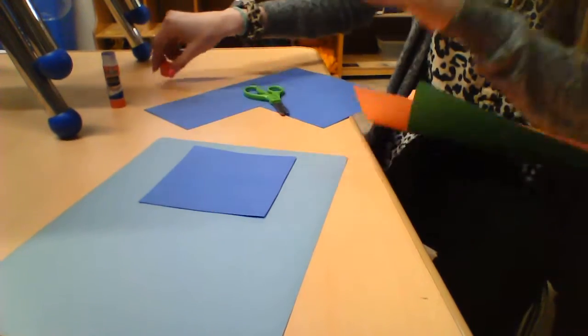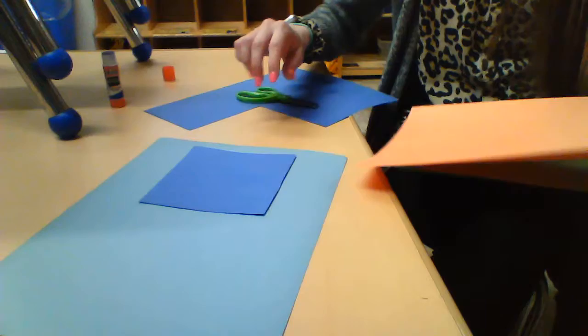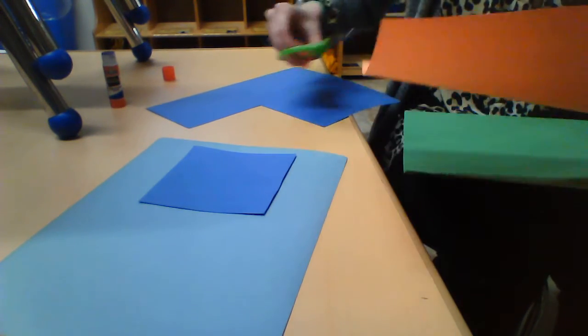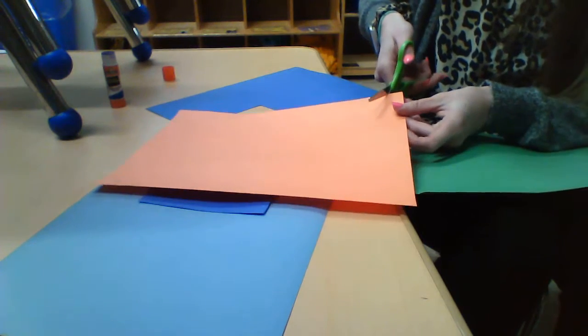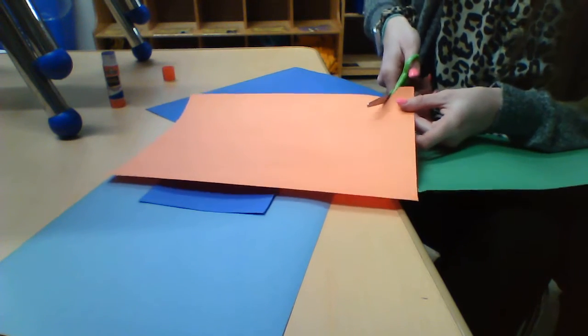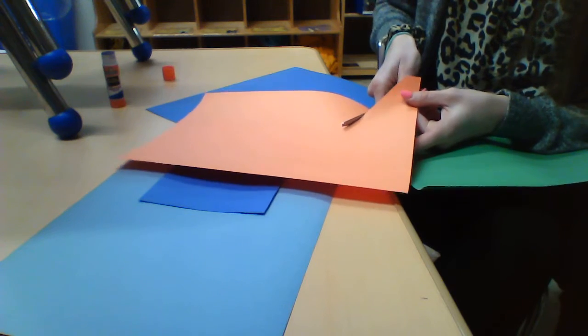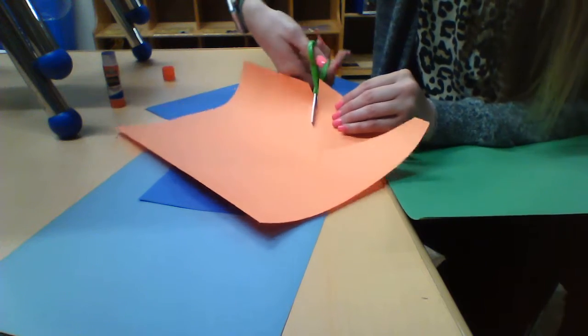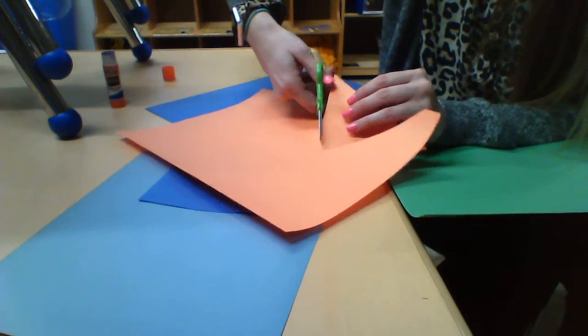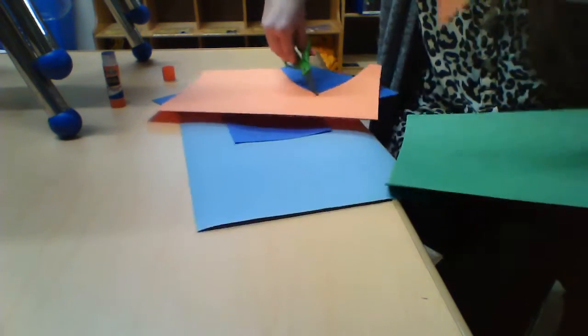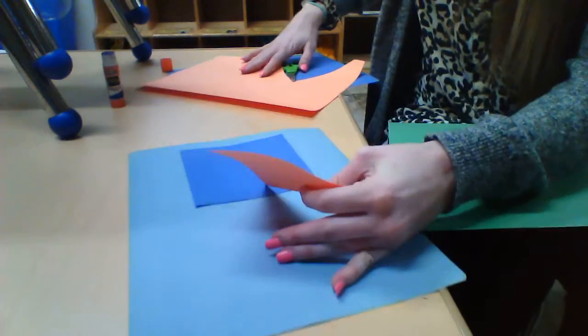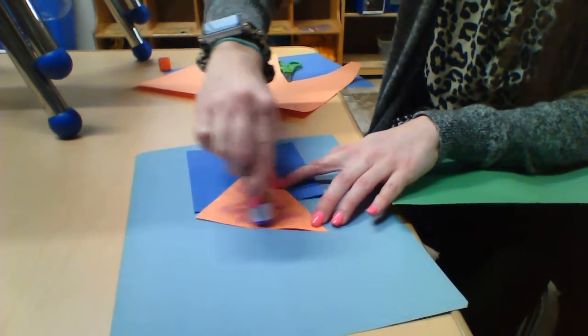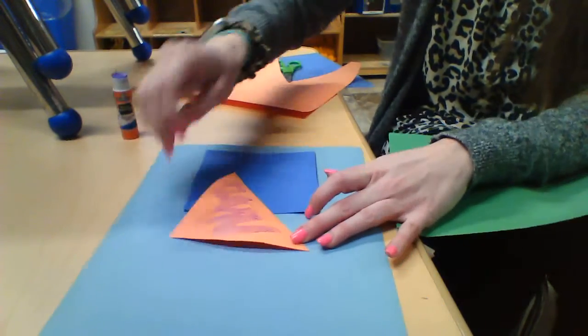What does every house need? We definitely need a roof. Right now it's raining, so we need a roof to keep us dry. Miss Smith is going to take her orange piece of paper and make a triangle for the roof. Once I have my triangle cut out, I'm going to get some glue, put it on the back of my triangle, and stick it on top of my square.